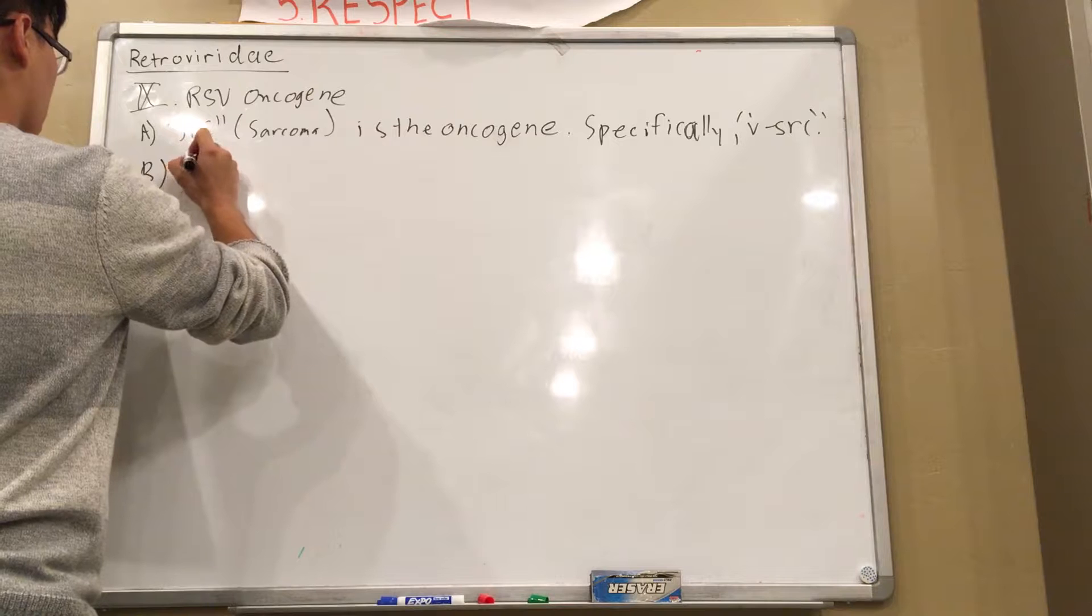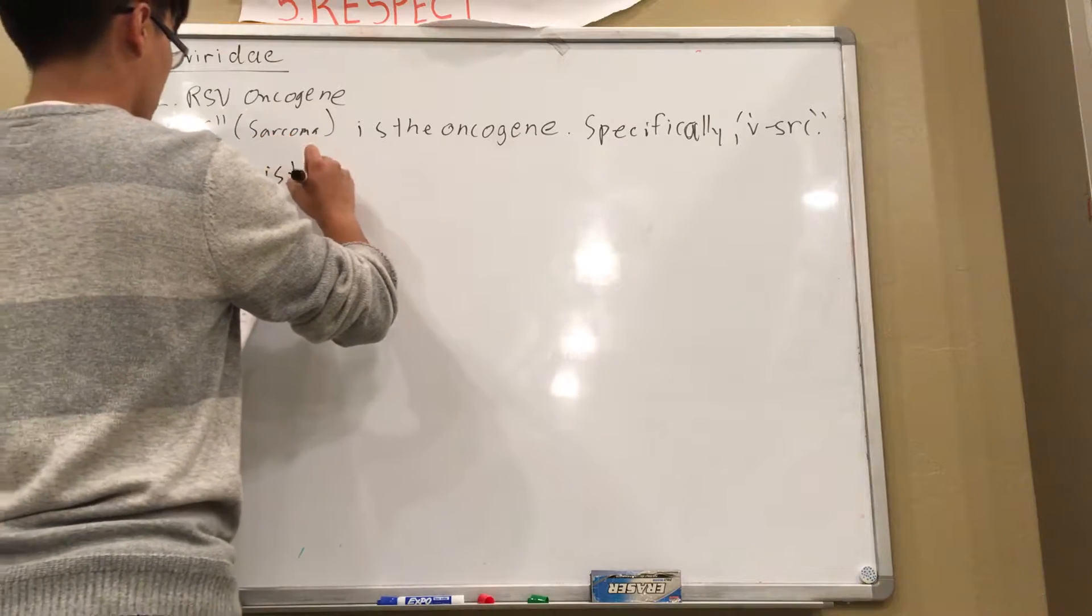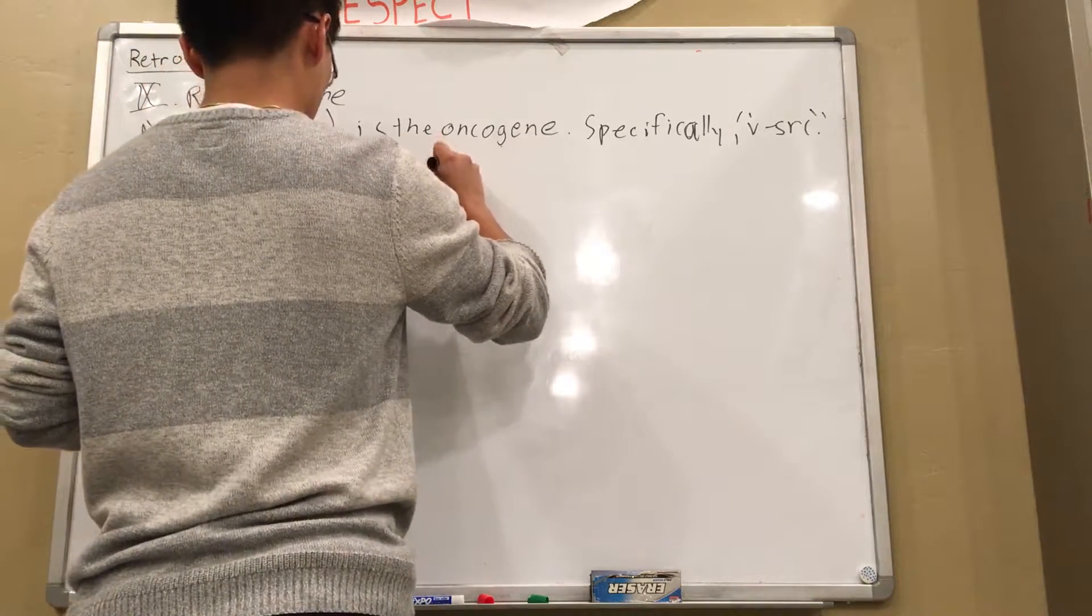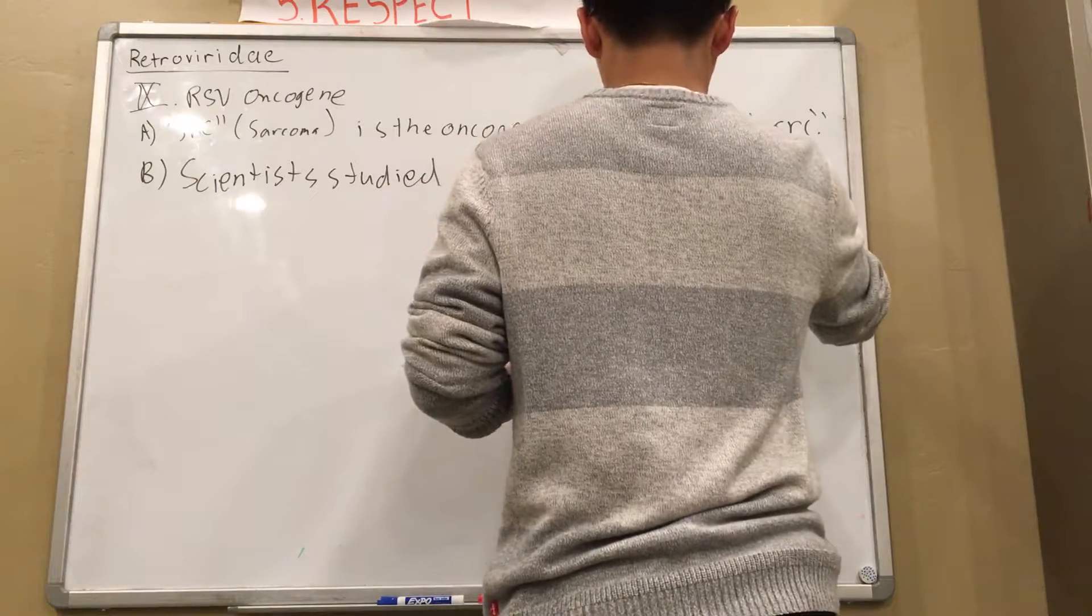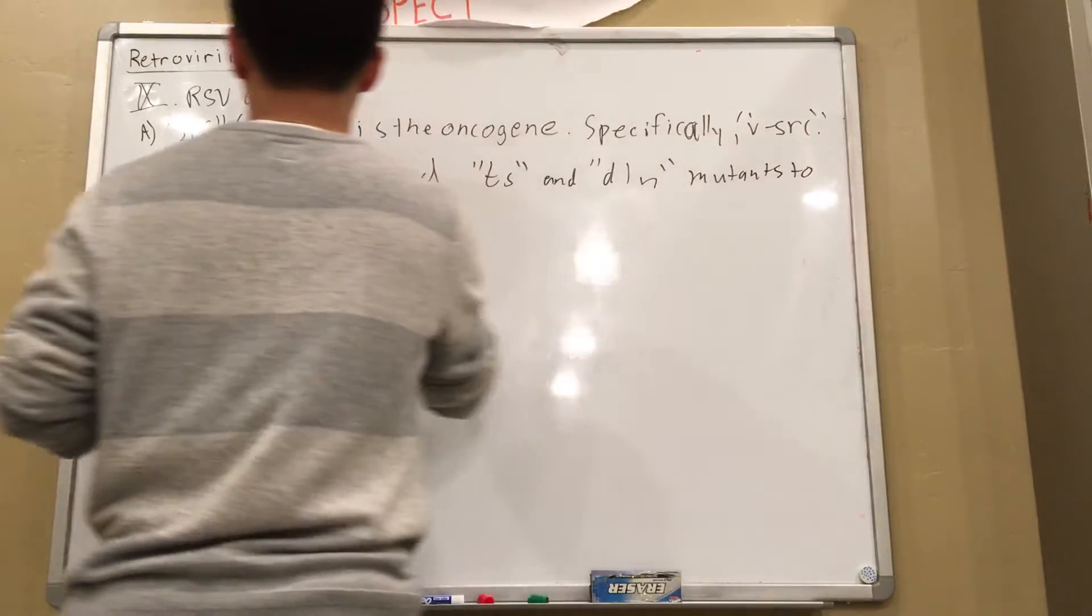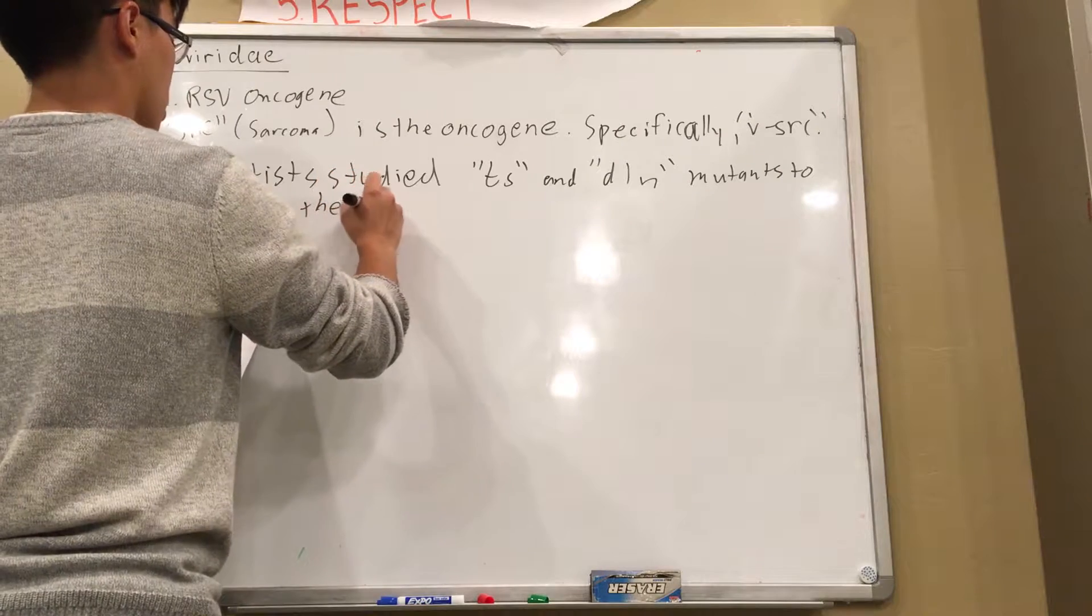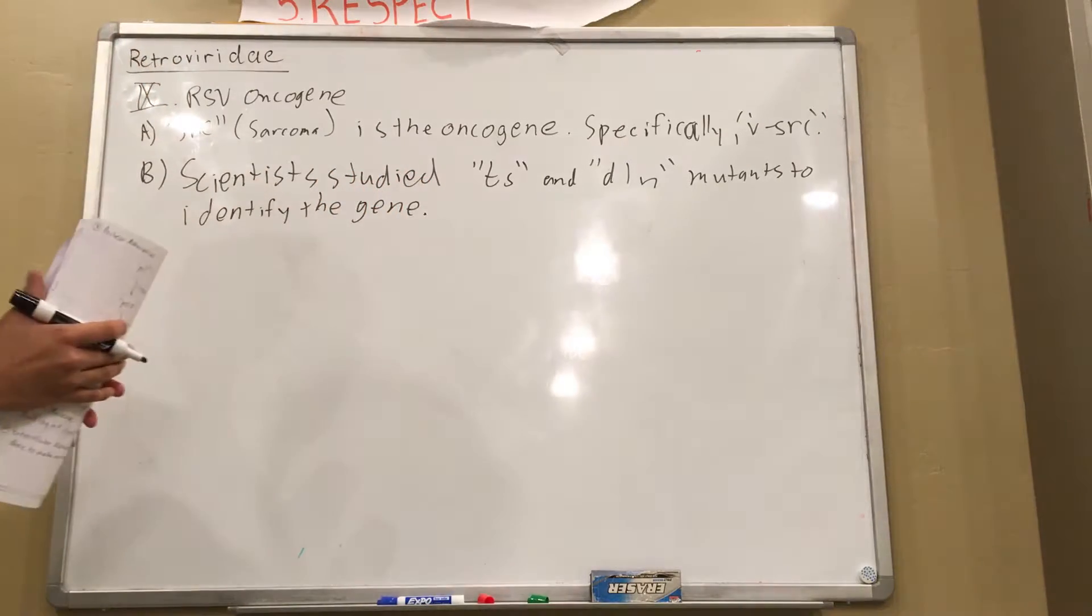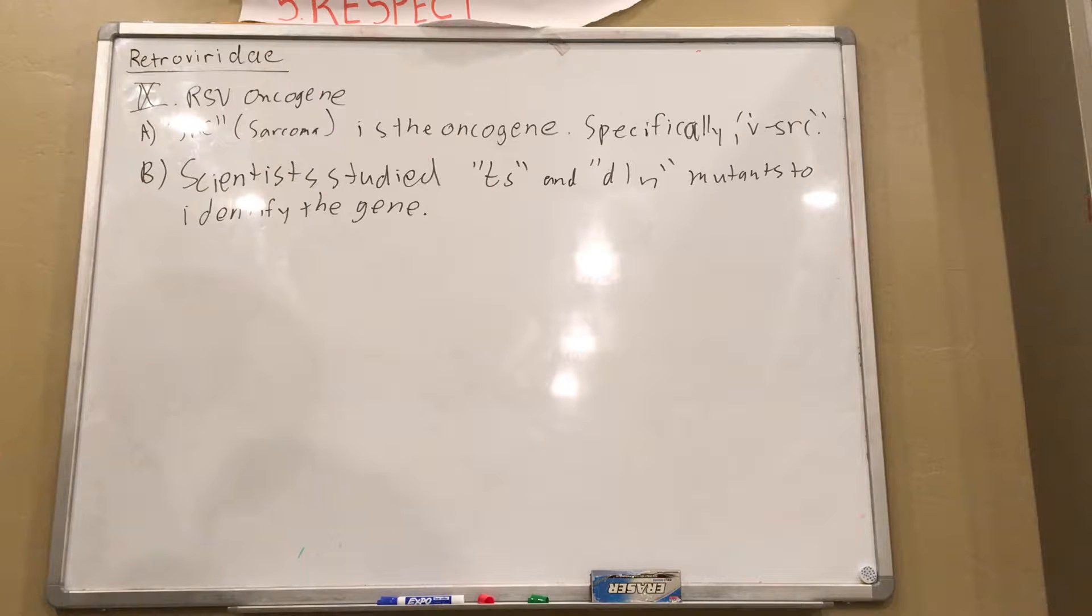Now, scientists studied TS and DLN mutants to identify the oncogene. I don't remember clearly, but I believe the TS and DLN mutants were mutants that had a non-functioning V-SARC and they noticed infecting chickens with these RSV mutants, with these TS and DLN RSV mutants, did not lead to cancer.